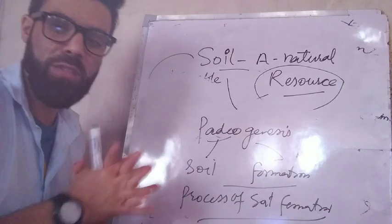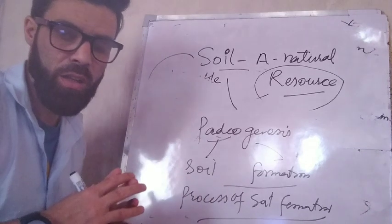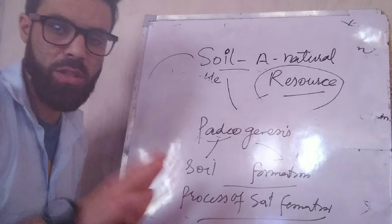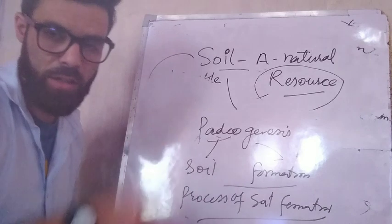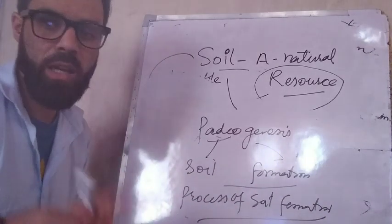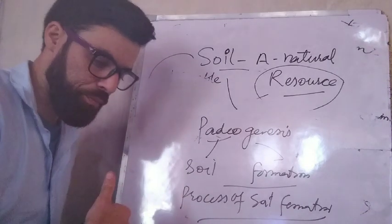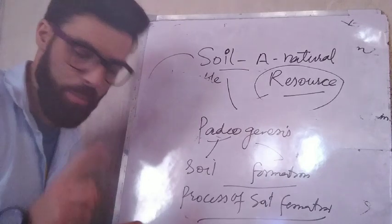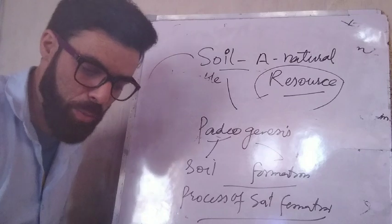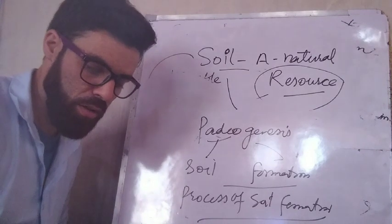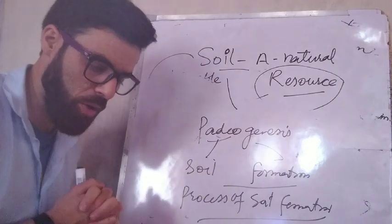Soil is formed by the process called weathering. In the next video we will talk about weathering in depth and see its various types — physical, chemical, and biological — each with their own sub-parts. Soil is formed when rocks break down, and weathering takes place due to many agents like water, wind, and temperature.